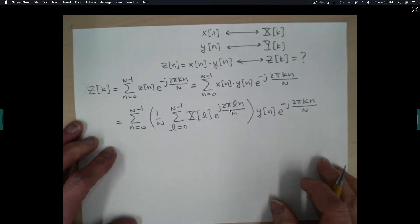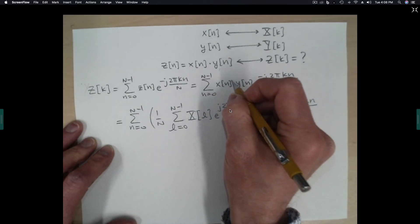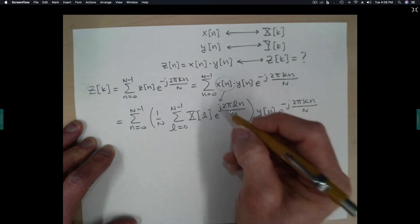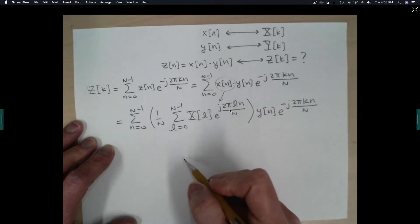Okay, so there we are with the substituting in place of x(n), its inverse, its definition as the inverse DFT of x(L).